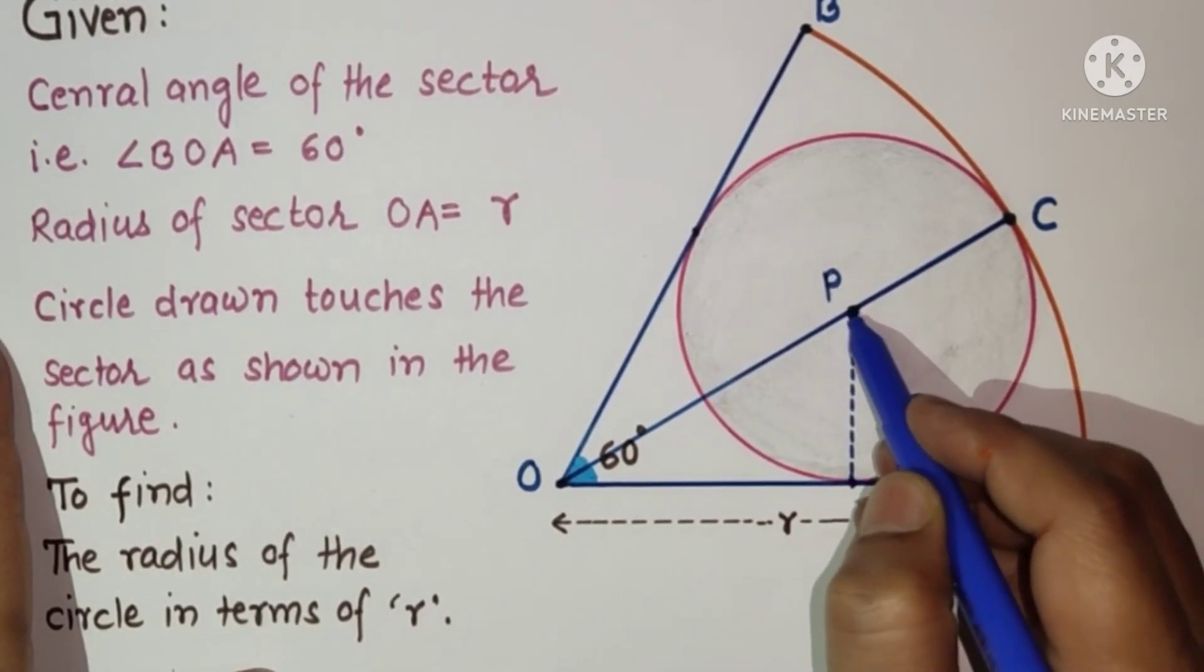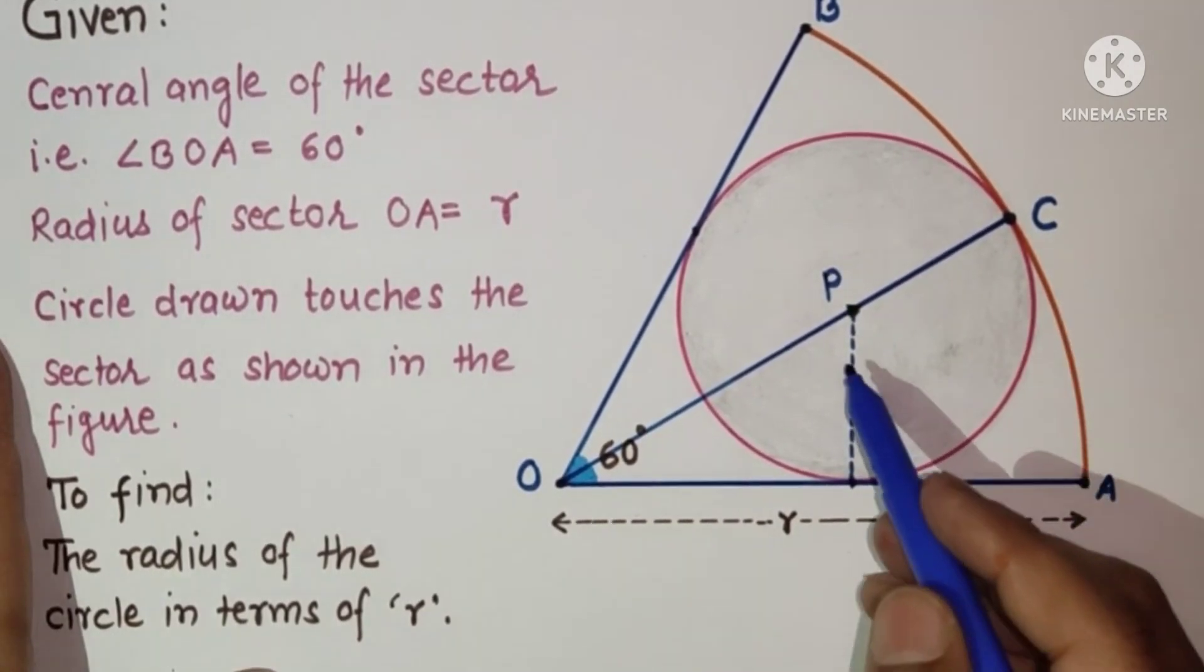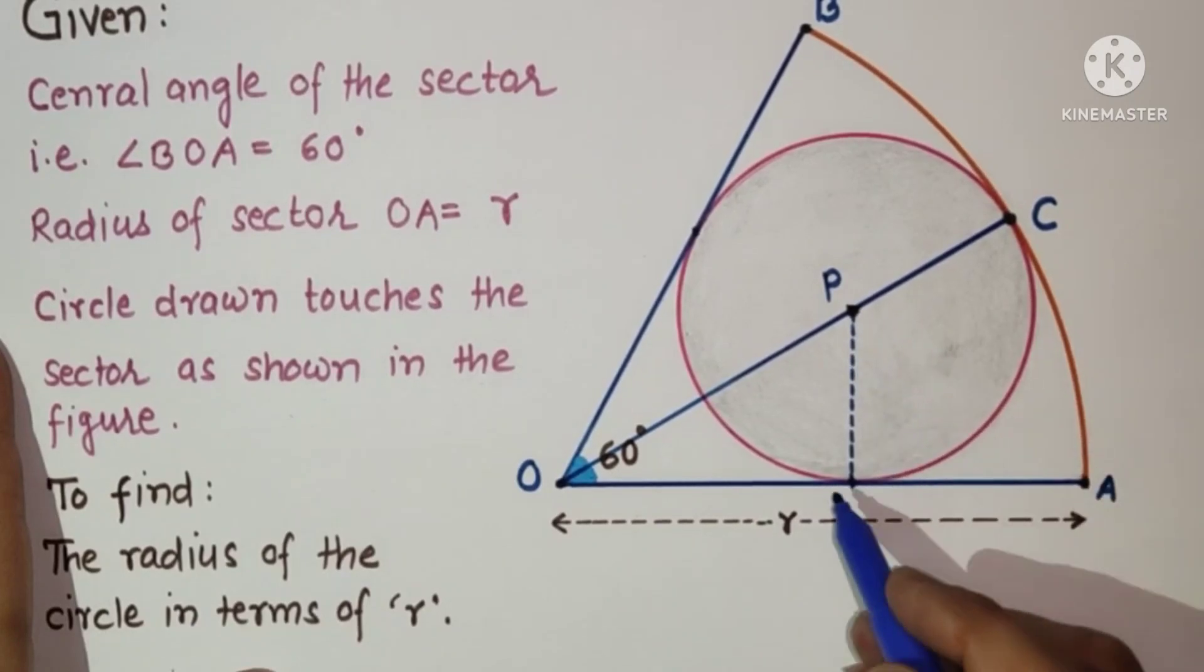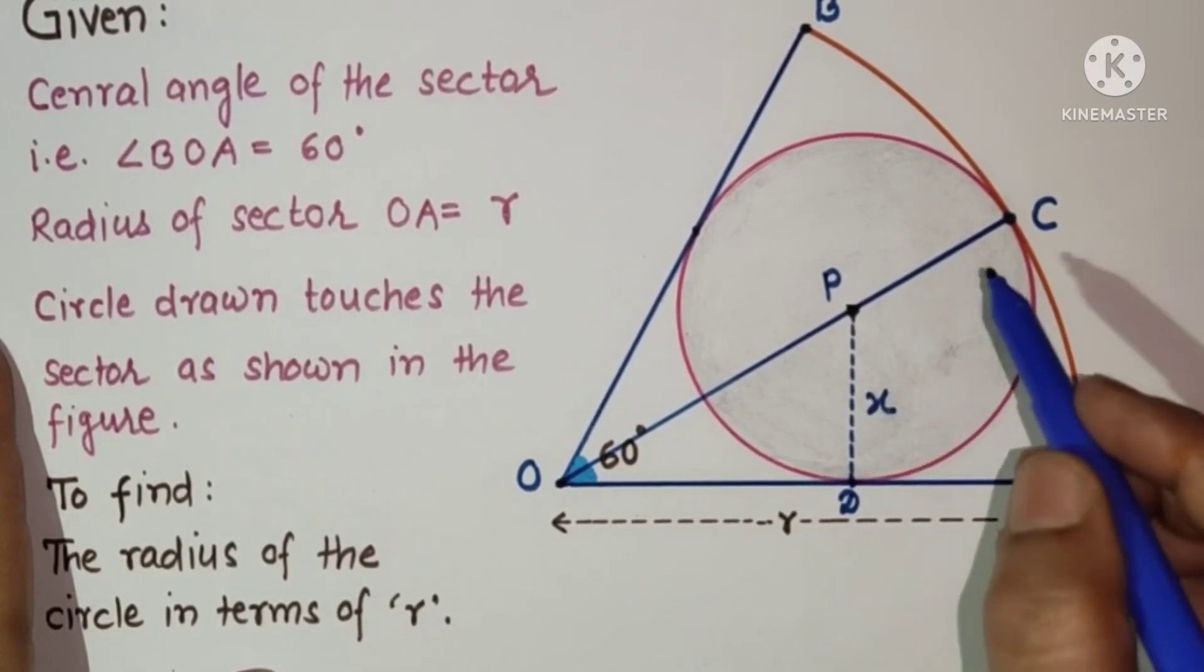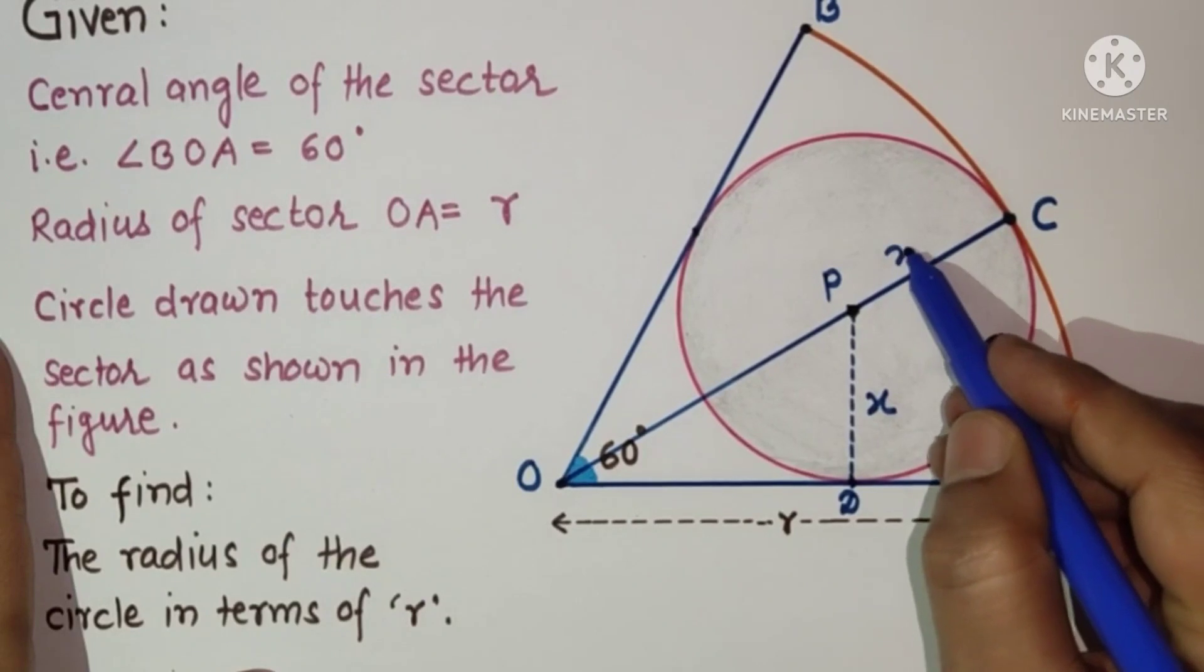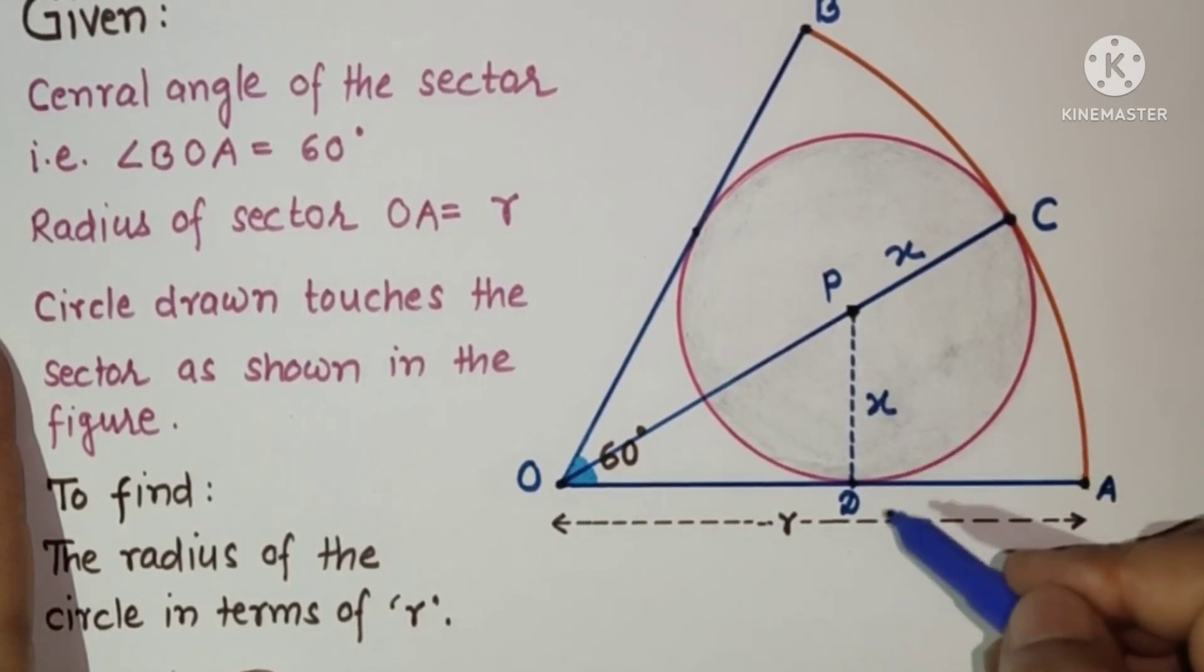From this point to this point D, PD is the radius. Let us suppose this is X, so PC will also be X. We have to find this X in terms of R.